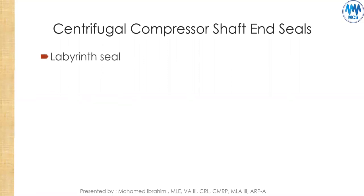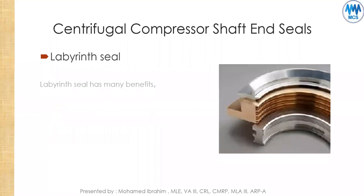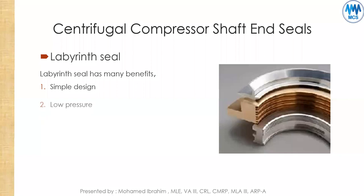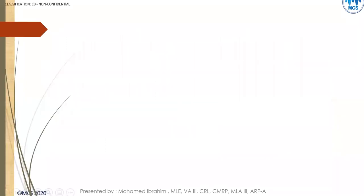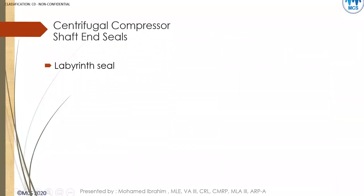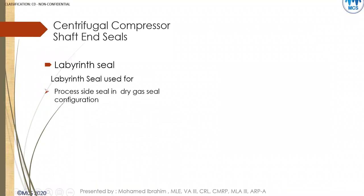We'll start with a brief overview of the labyrinth seal and the others, then end with the dry gas seal. The labyrinth seal, as you see here, is a simple design for low pressure applications. It is generally made from softer material to prevent damage to the rotor. Labyrinth seals are used in many places in centrifugal compressors.